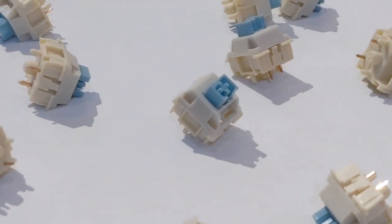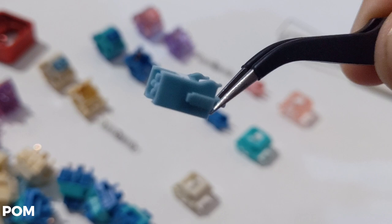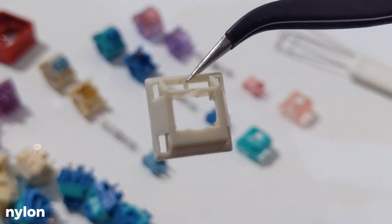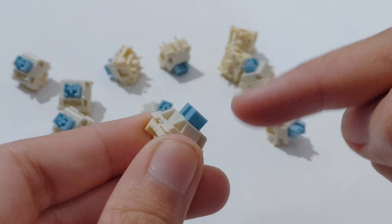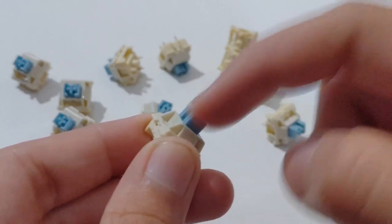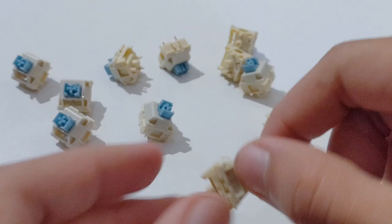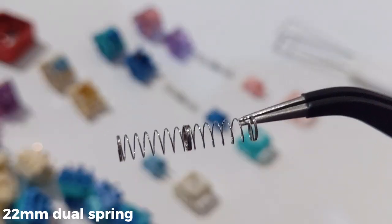The other one is the EpoMaker Budgiecar. With a light blue POM stem and cream colored nylon housings, this is a tactile switch with 50 grams of initial force and a 60 grams bottom out. This has the same 22mm dual spring.